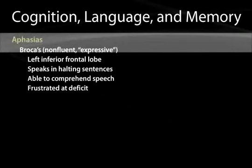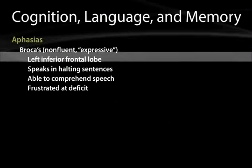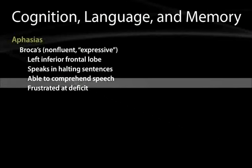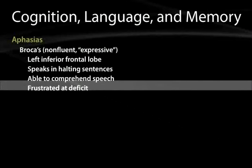An aphasia of the Broca's type is called a non-fluent or expressive aphasia. People with this type have a lesion in the left inferior frontal lobe, and they will speak in halting sentences — unable to get words out fluently. They may show frustration, and sometimes they are able to curse fluently. But when trying to put together complex sentences, they have real difficulty. That's called Broca's or non-fluent aphasia.